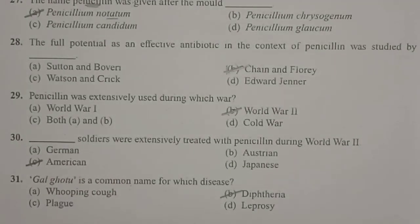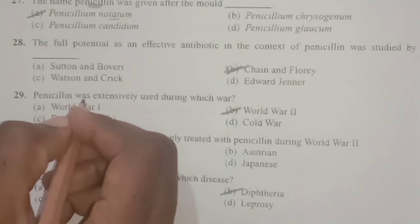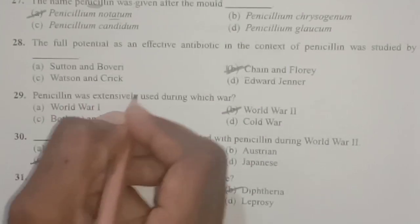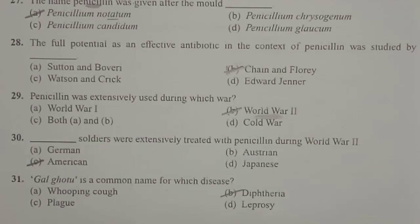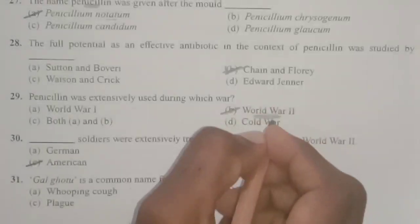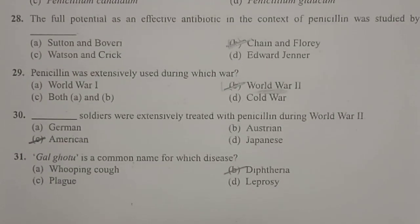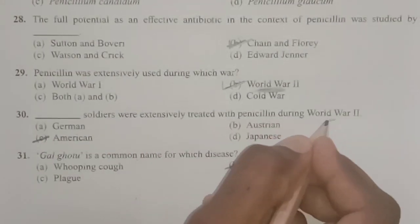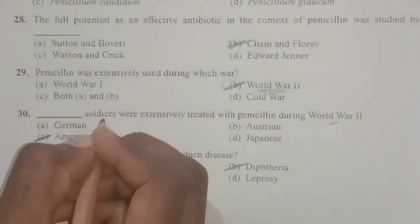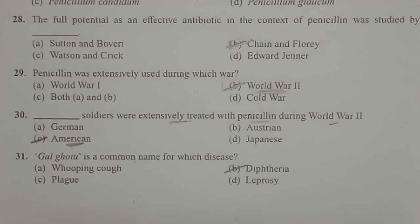Next: penicillin was extensively used during which world war? Penicillin is one of the effective antibiotics extensively used during the Second World War. It was used to treat American wounded soldiers. The following question also confirms: American soldiers wounded in the Second World War were extensively treated with the drug penicillin.